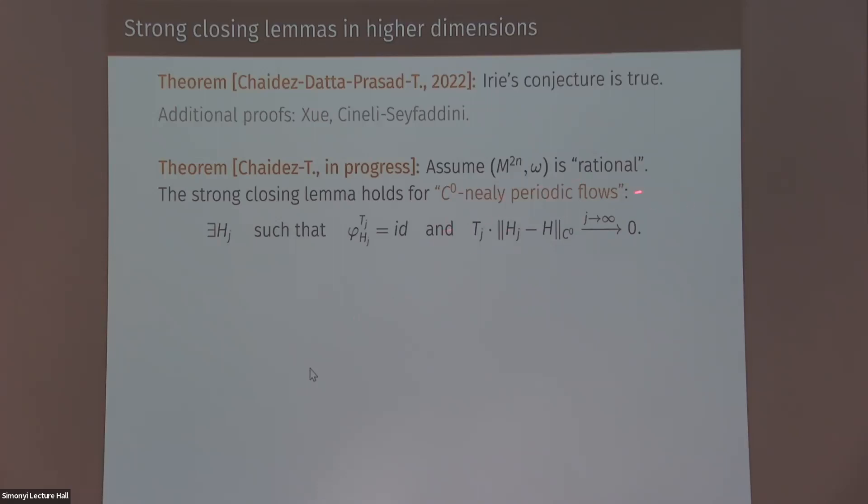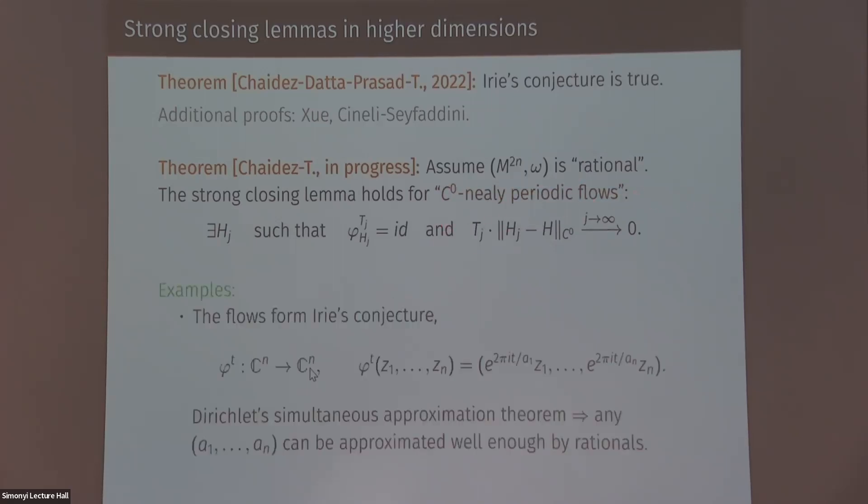So this is the theorem. What are examples of such C0 nearly periodic flows? Well, the flows from Irie conjecture satisfy this condition. This is a consequence of the Dirichlet Simultaneous Approximation Theorem. But you have plenty of other examples, like any Hamiltonian T^k action satisfies this. And there are also some more interesting dynamically maps that were constructed by Irie and Saprykina.